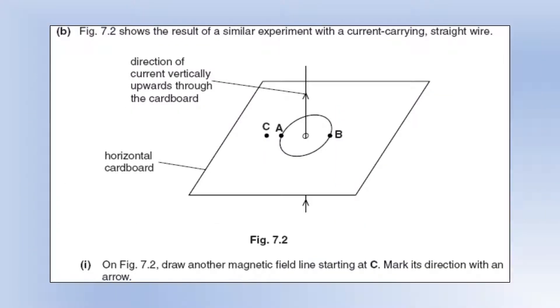The diagram shows the result of a similar experiment with a current carrying straight wire. Draw on a magnetic field line starting at C. Mark its direction with an arrow. So first of all, we can draw a field line on. We're going to get essentially another circle around there. And then what I'm going to do is I'm going to use the right-hand cork rule. So if you take your hand, make a thumbs-up sign because the current is going upwards. So your thumb should be in the direction of the current. So my thumb is pointed upwards. And you can see your fingers are going around from and ending up going around anti-clockwise here because you follow the direction of your fingers. And so we get a field that looks like this.